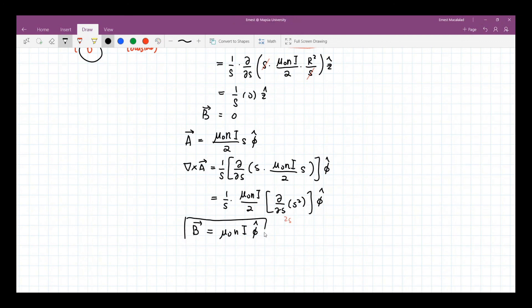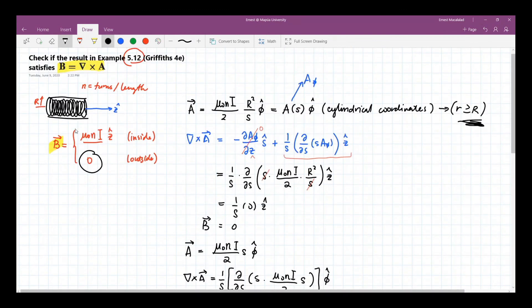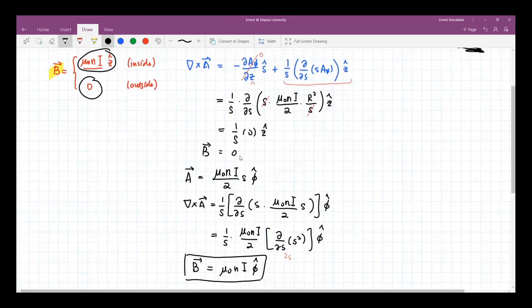We end up with mu naught n I z hat. This is your magnetic field, which is what we got earlier.